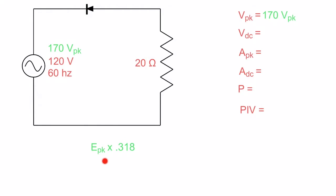Now I've got it written down here. E-peak, which is the 170 volts, times 0.318 is going to give us our voltage at the resistor. In this case, it's going to be 54 volts DC. Okay, we're getting there.